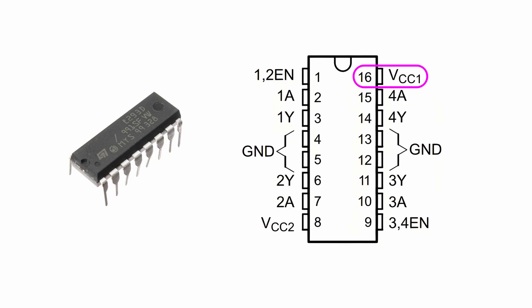Pin 16 VCC1 is the logic power pin, typically connected to a 5 volts supply. Pin 8 VCC2 is the motor power pin, supporting an input voltage range of 4.5 volts to 36 volts. In our project, it is connected to a 9 volts power supply.